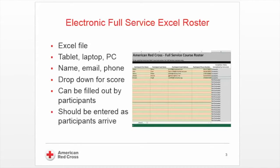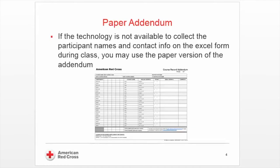In terms of the student list, you'll be able to use the Excel version to have students enter their name. You'll either have them do this via a tablet, laptop, or PC. There's a drop-down in the final column to put the scores, but in the first columns they'll be able to put their first name, last name, email, as well as their phone number.